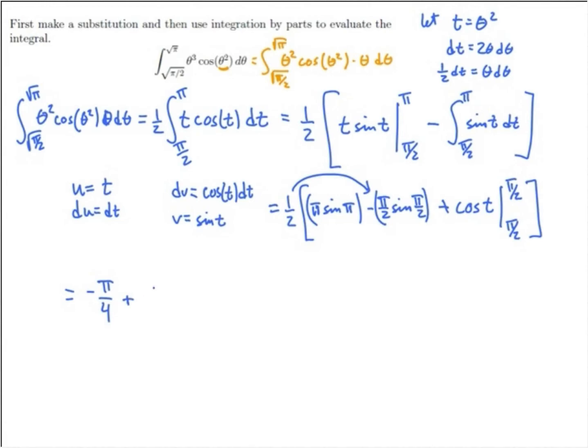Plus one-half. Now, what's cosine of pi over 2? Cosine of pi is the upper limit of integration. Cosine of pi is negative 1, minus cosine of pi over 2 is 0.